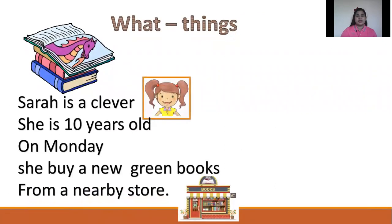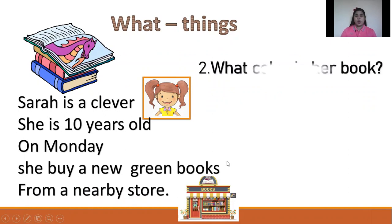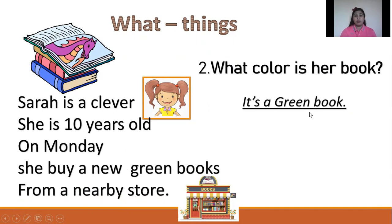Let us read. WHAT refers to things. Sarah is clever. She is 10 years old. On Monday, she bought a new green book from a nearby store. What color is her book? WHAT refers to things. The thing in the story is the book. What color is her book? It's a green book.